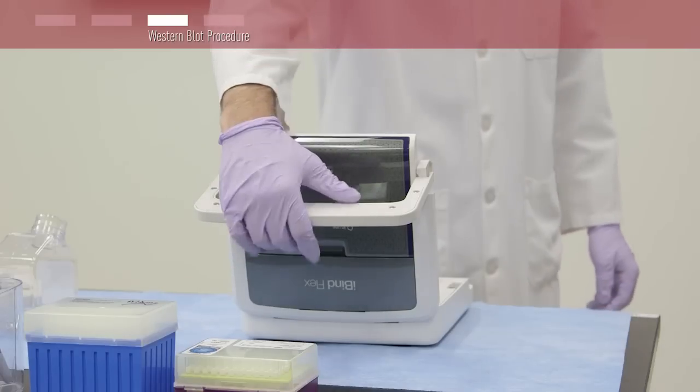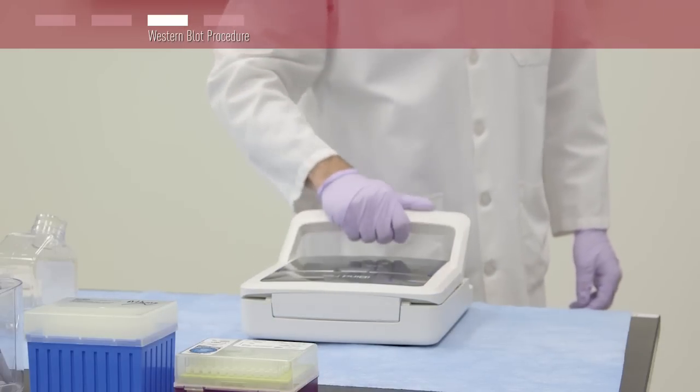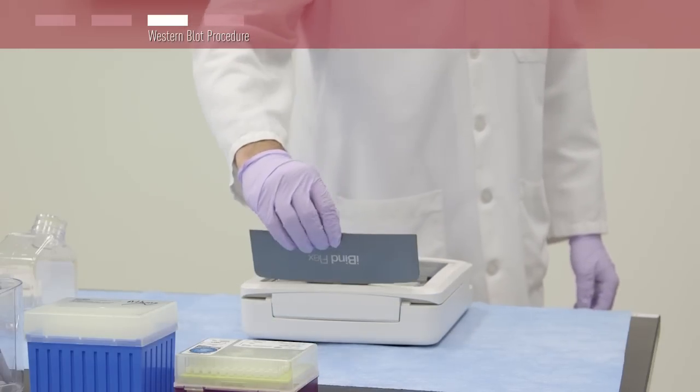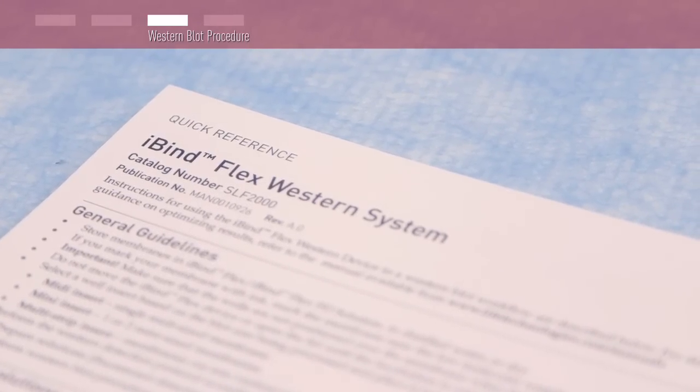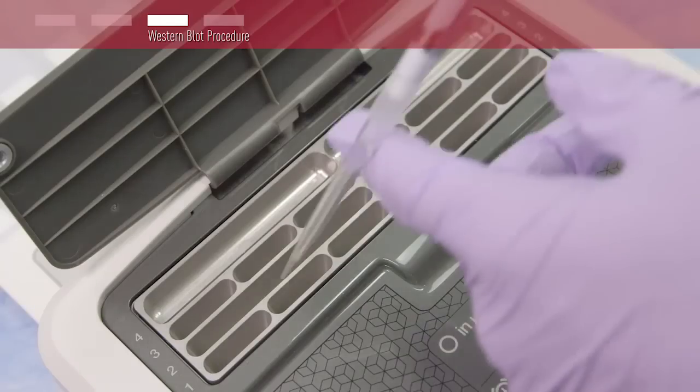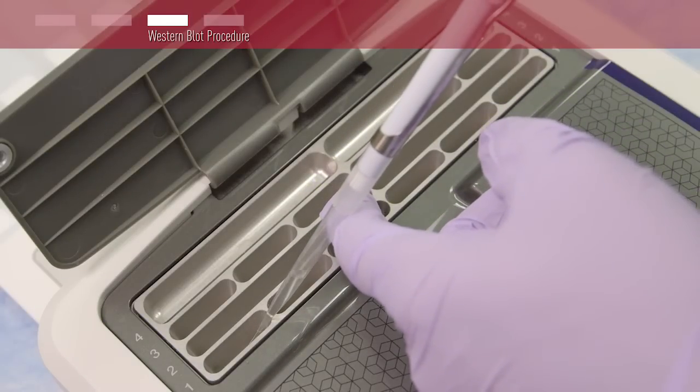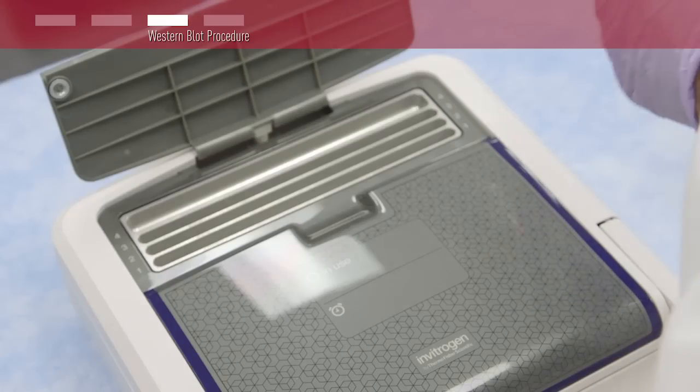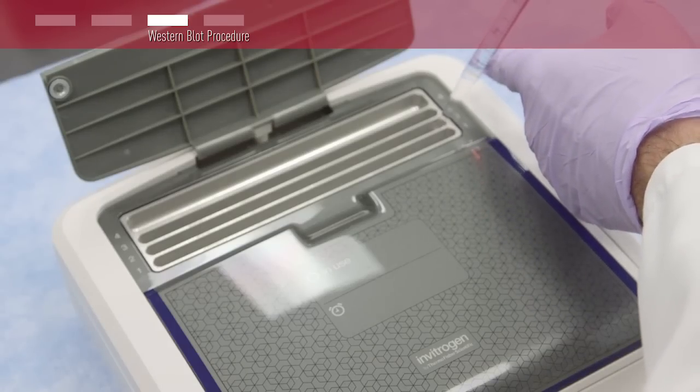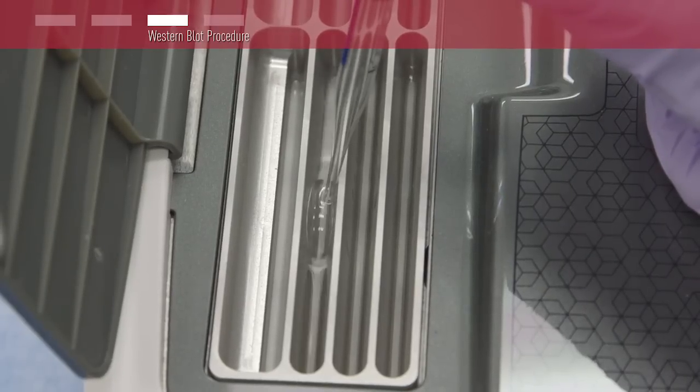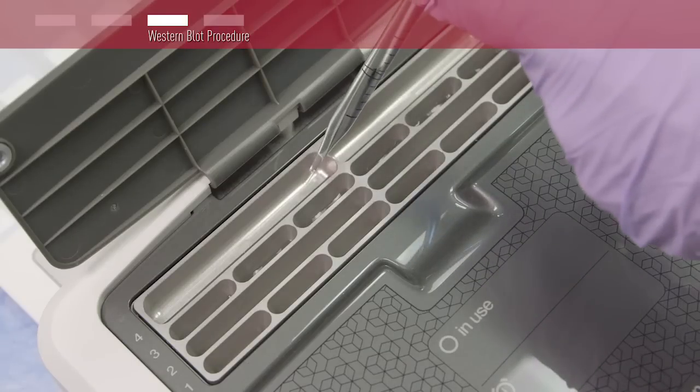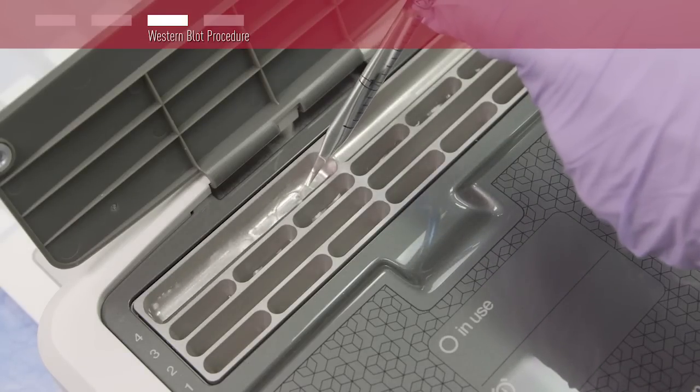To continue, close and latch the lid and open the liquid door to expose the wells. Add the volume of reagents specified in the quick reference card sequentially, starting with your primary antibody in each well of row 1, 1X iBind Flex solution in each well of row 2, your secondary antibody in each well of row 3, and more 1X iBind Flex solution in each well of row 4.